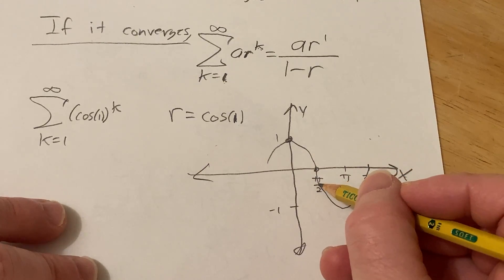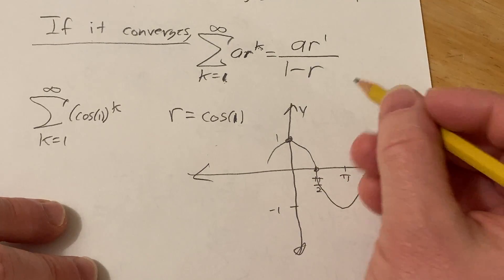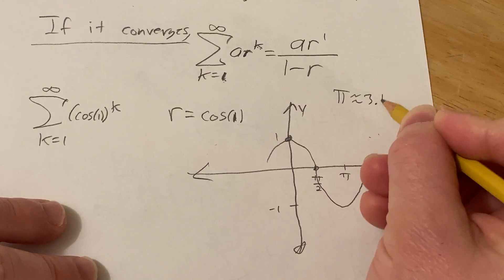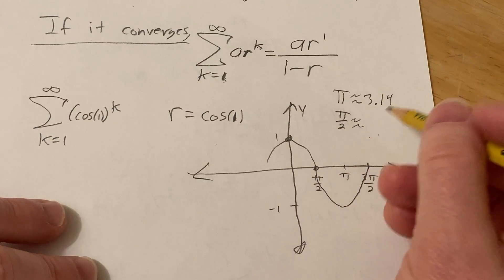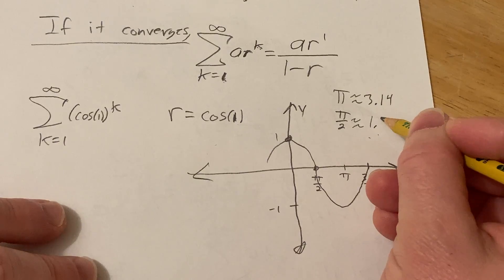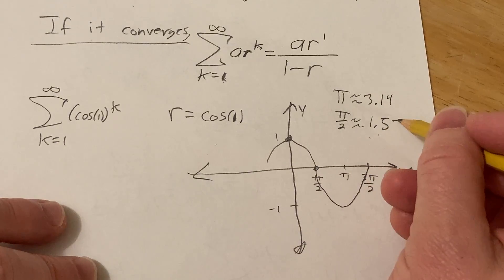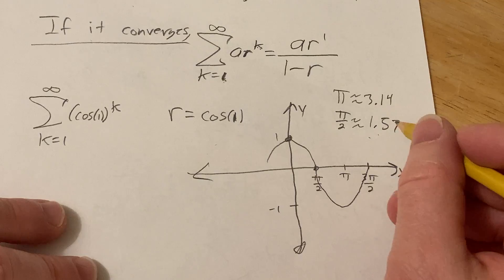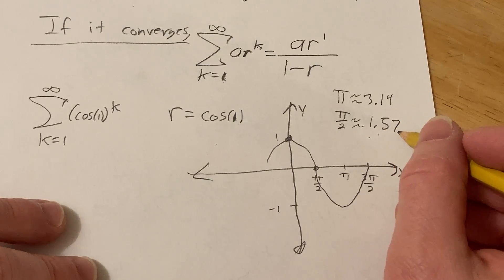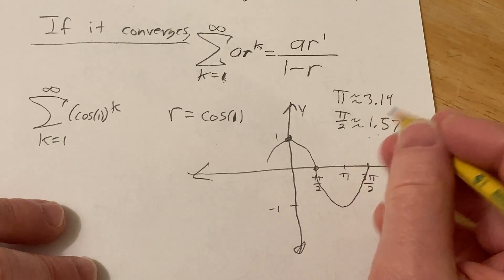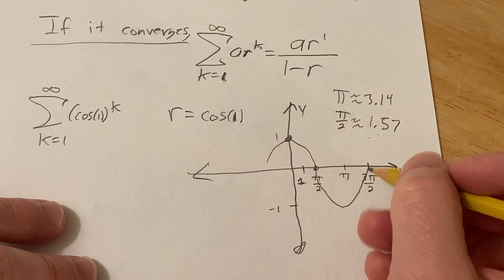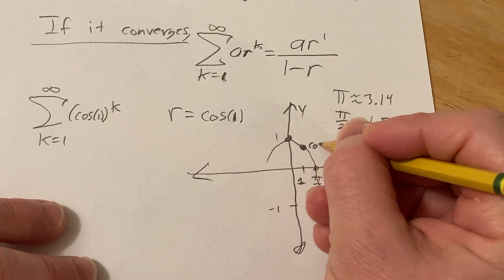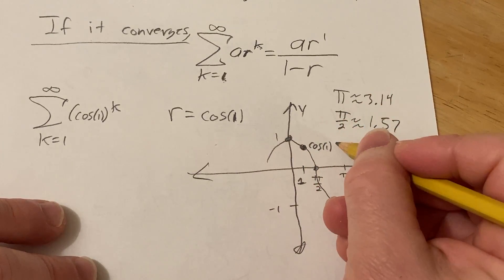So pi over 2, let's think about what number that is. So pi is approximately 3.14. So pi over 2 is approximately 1.57. Because 1.5 times 2 would be 3, and 0.07 times 2 would be 0.14. So approximately that. So 1 is going to be like right here. So the cosine of 1 is going to be some y value here, and that's certainly less than 1.